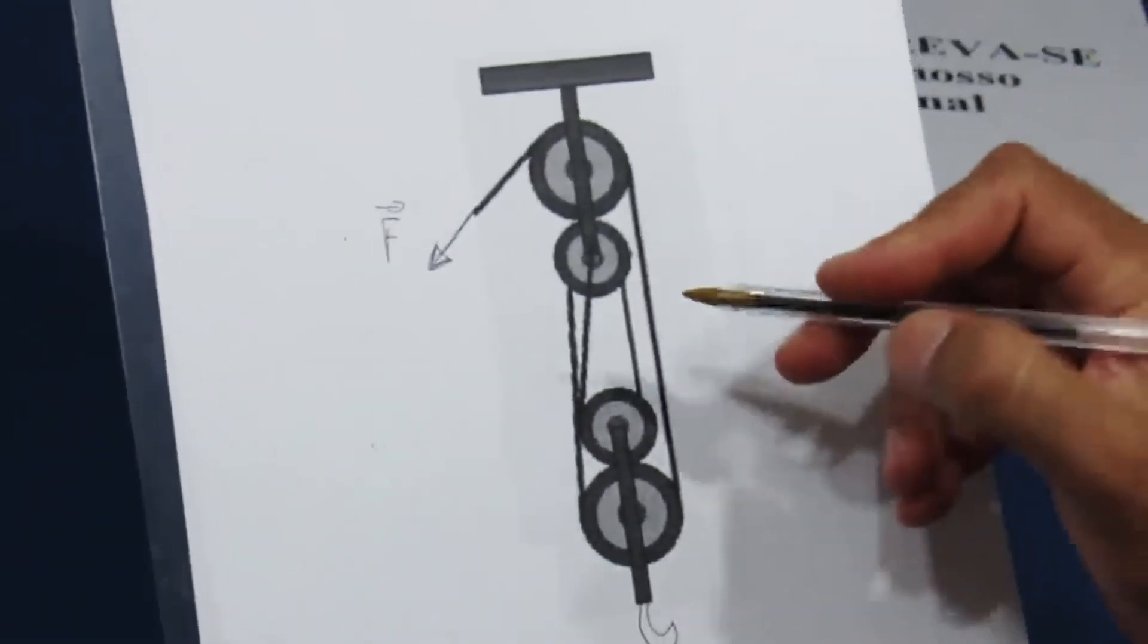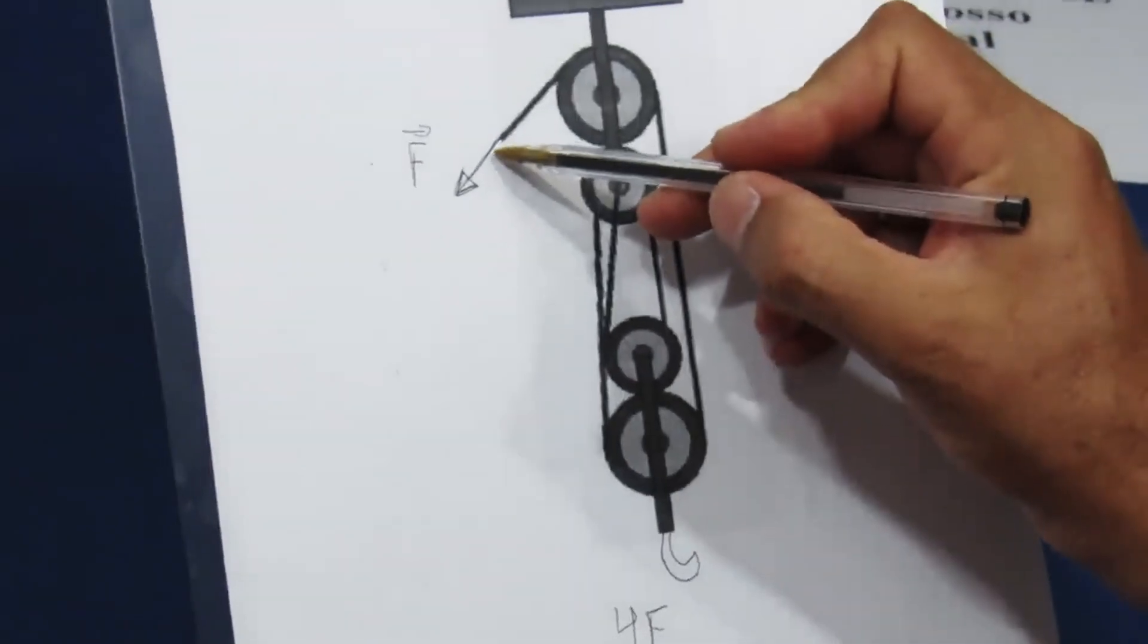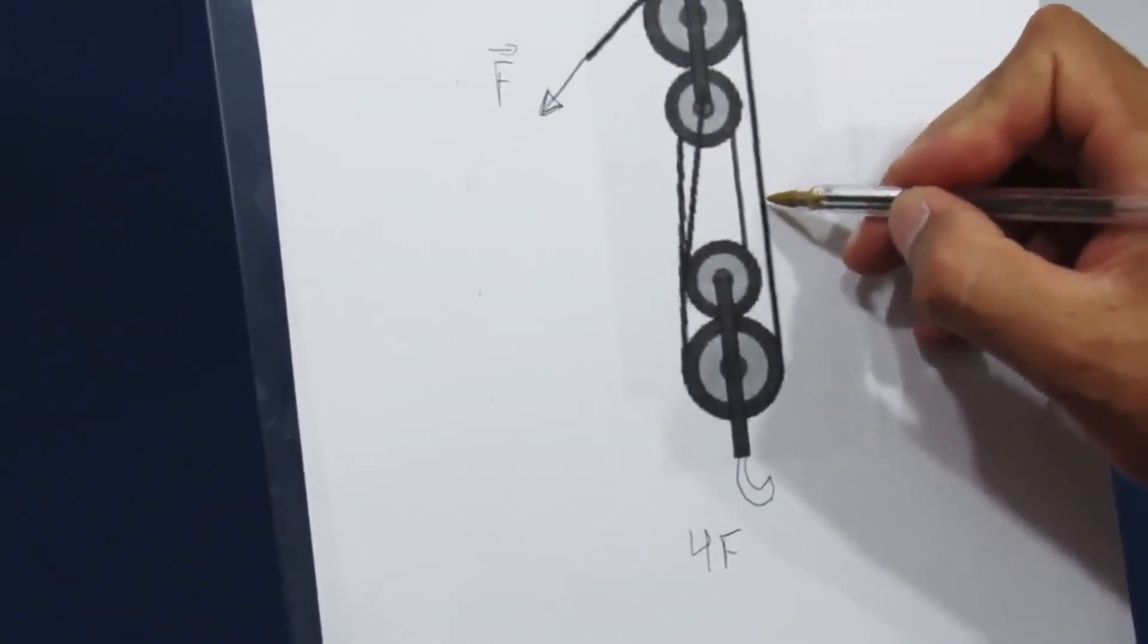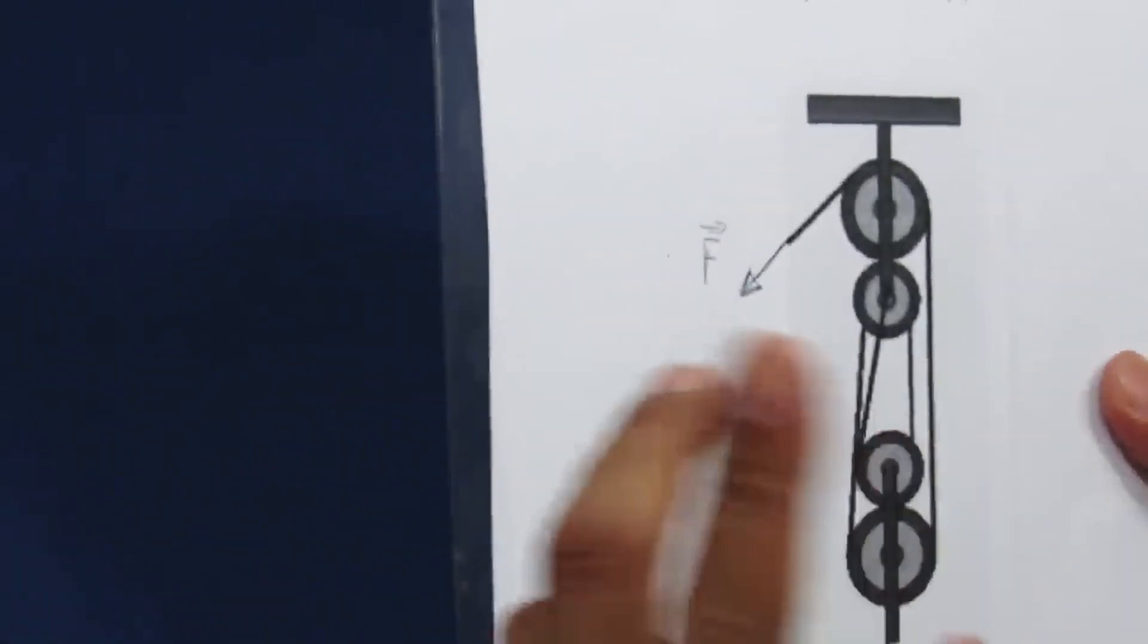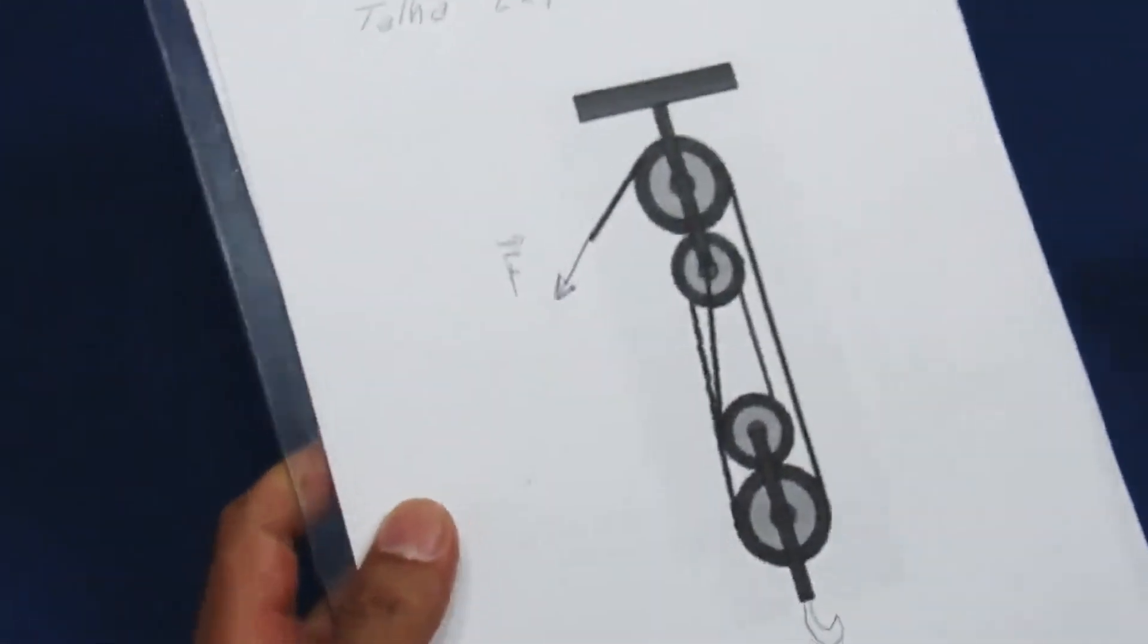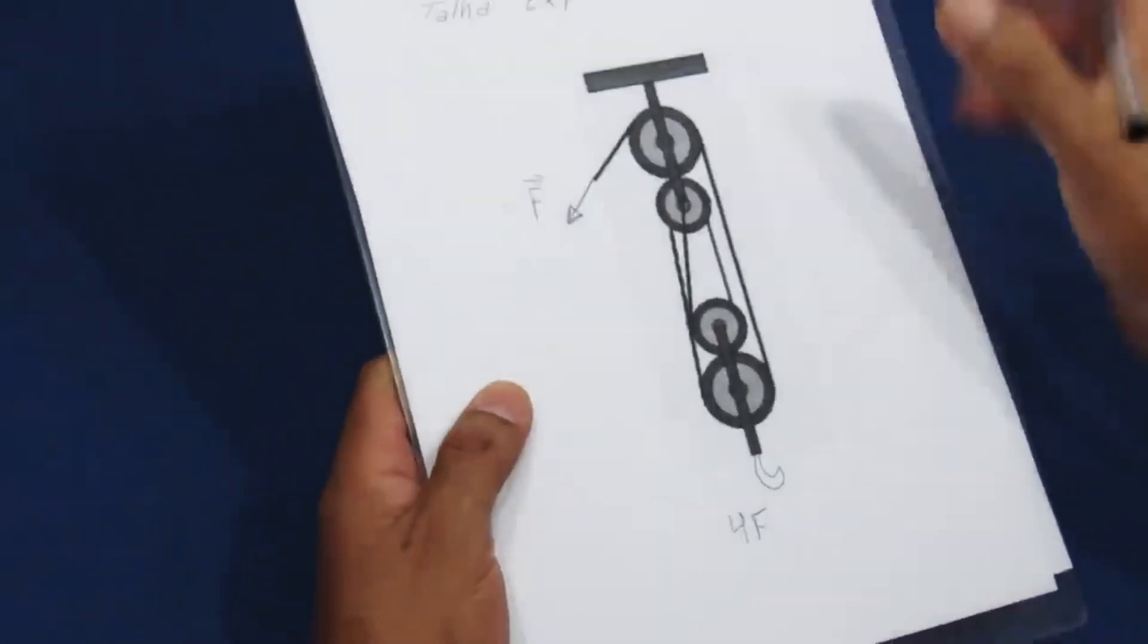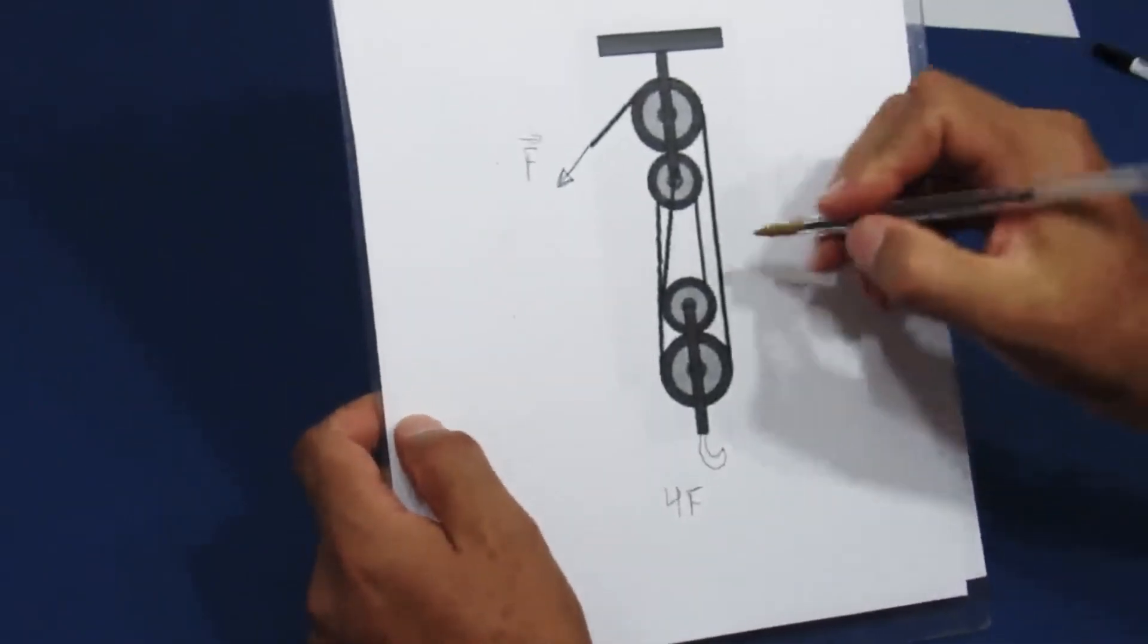This happens because the force F that I apply to the cable is distributed. It will appear here one, two, three, four times. It almost seems magical. If this seems like a boring physics class, don't skip the video yet, you're in for a surprise.